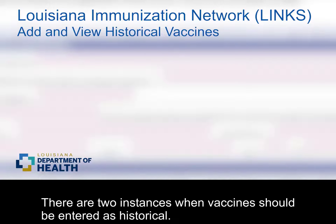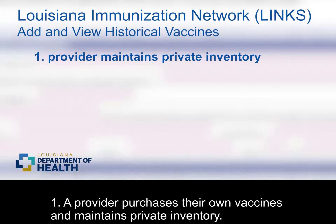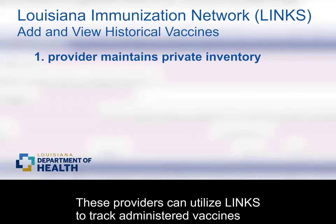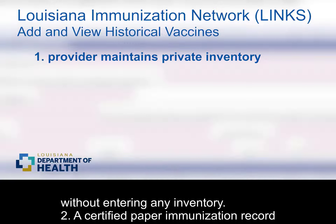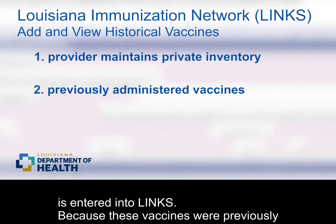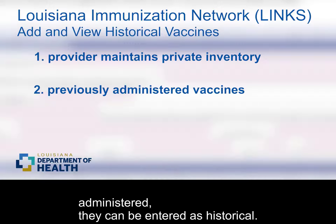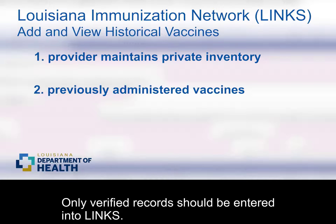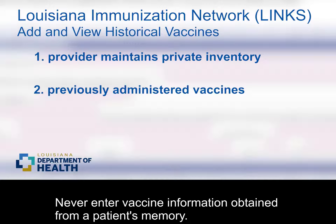There are two instances when vaccines should be entered as historical. One, a provider purchases their own vaccines and maintains private inventory. These providers can utilize LINX to track administered vaccines without entering any inventory. Two, a certified paper immunization record is entered into LINX. Because these vaccines were previously administered, they can be entered as historical. Only verified records should be entered into LINX. Never enter vaccine information obtained from a patient's memory.